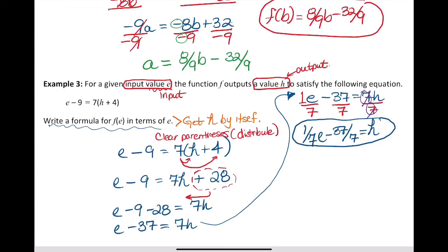The actual answer - we've got to get it in terms of e. We really want to write f(e) = 1/7 e - 37/7. And that's how that one's done.